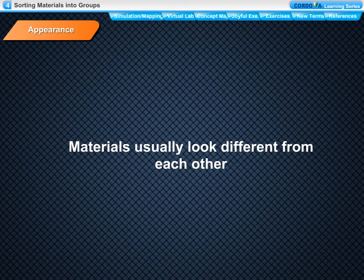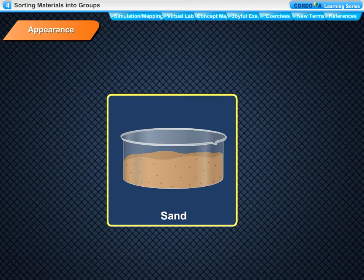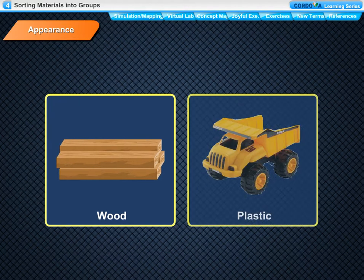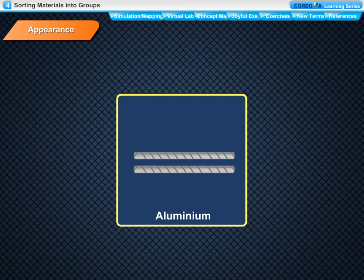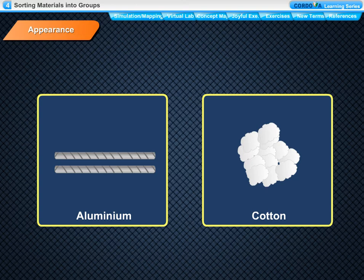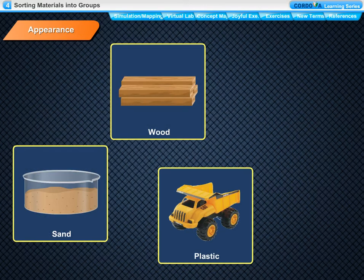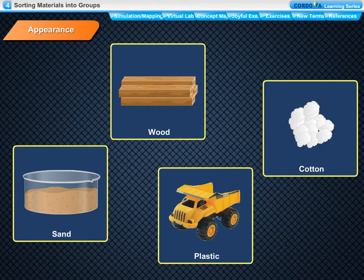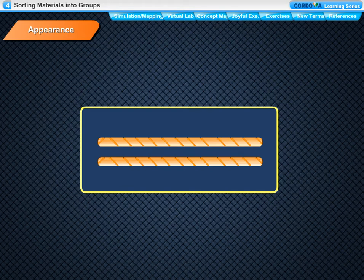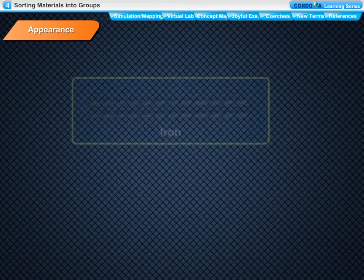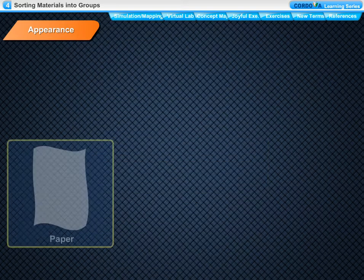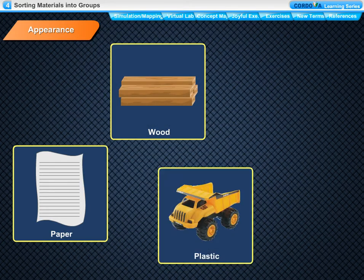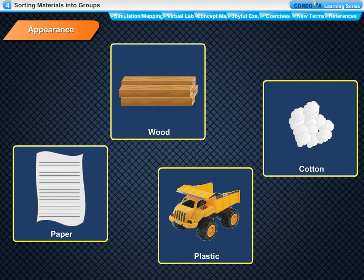Appearance. Materials usually look different from each other. Sand looks very different from wood. Wood appears quite different from plastic. Plastic looks different from aluminium. Aluminium looks different from cotton. The property of a material with a shining surface is called luster. Materials like iron, copper and aluminium, which have a lustrous shining surface, are called lustrous materials. Materials like paper, wood, plastic and cotton, which do not have luster, are called non-lustrous materials.